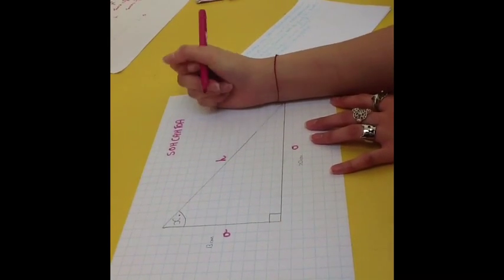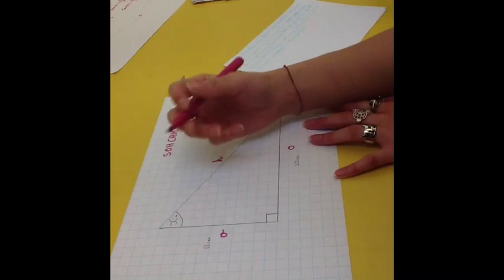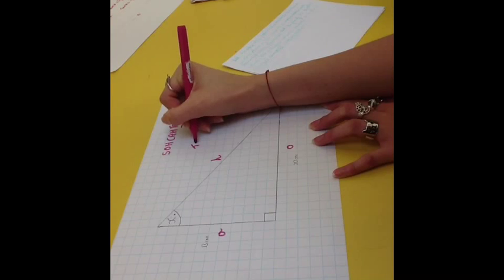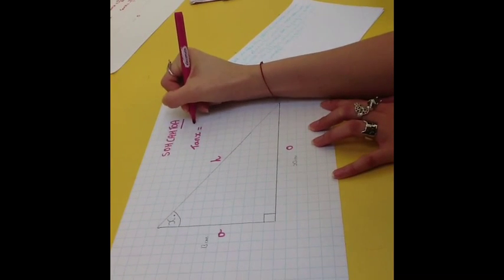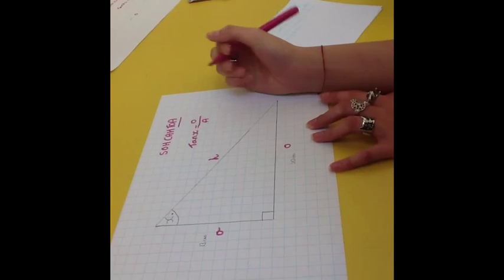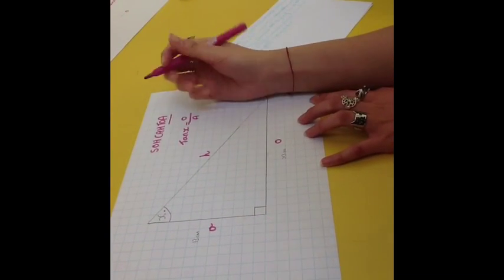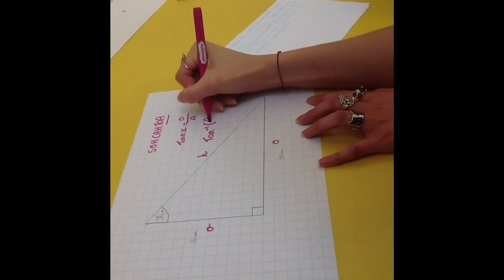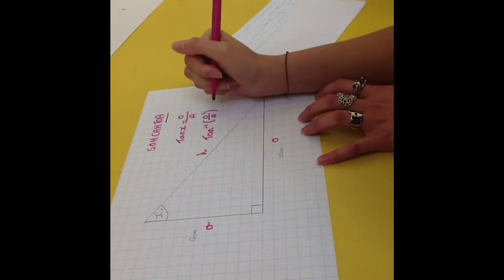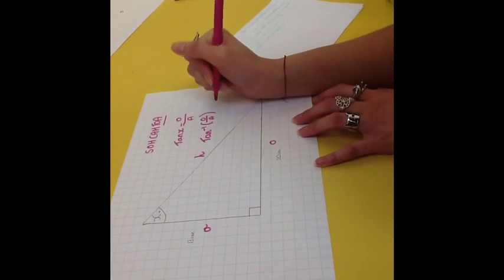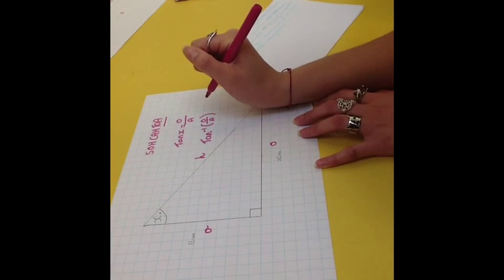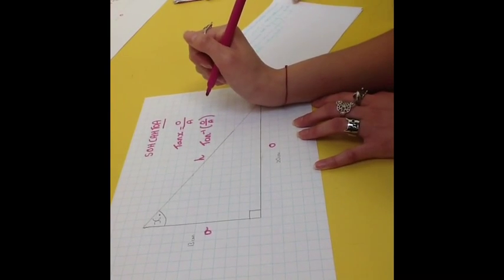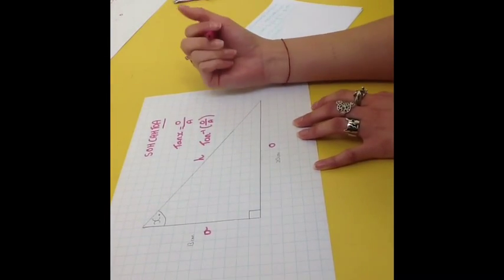So, what rule do we use? Well, we have the adjacent and the opposite and we want the angle. So, we want to use tan. So, write out the rule. Now, here's where it gets a little bit harder. We need to make this tan inverse over here. Because we are doing the inverse operation as normal trig functions are to find the sides using the angles we are given. Whereas, inverse is to find angles using the sides we are given.